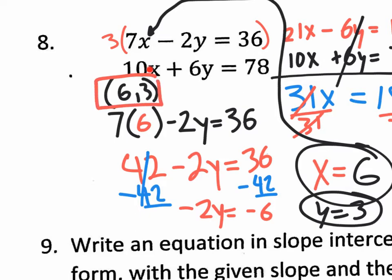So for example, on the bottom equation, 10 times X is really 10 times six. That's 60 right there. And six times Y that's six times three, that's 18, 60 plus 18 really is 78. So you've checked the bottom.